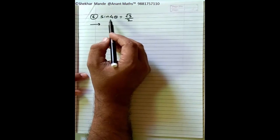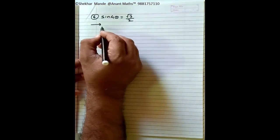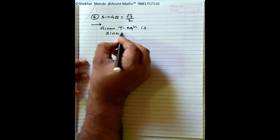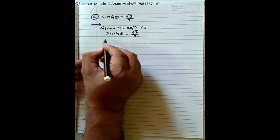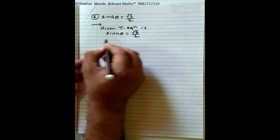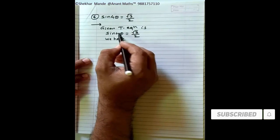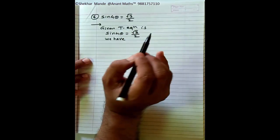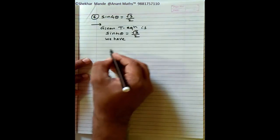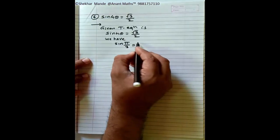Now consider another example: find the general solution of sin 4θ = √3/2. The given trigonometric equation is sin 4θ = √3/2. We need to express this in the form sin(something) = sin α.